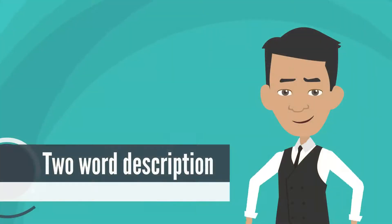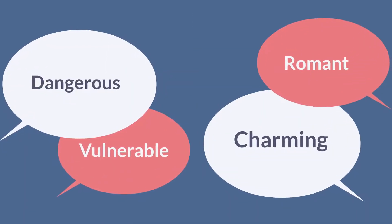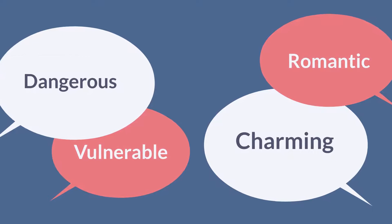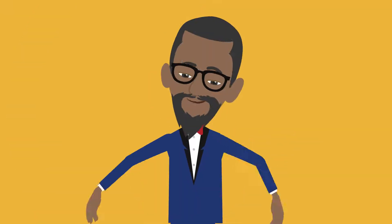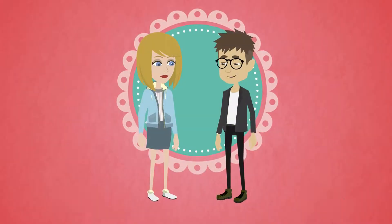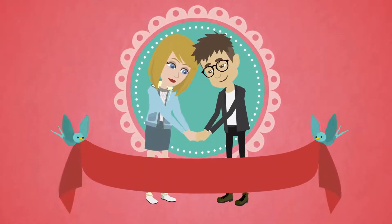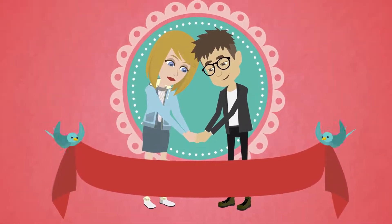The best thing to do is to come up with a two-word description for yourself — something like dangerous and charming, or romantic and vulnerable. This will set the tone for our shoot. Because if you are a romantic and vulnerable actor, then we don't need a gritty homicide detective headshot.